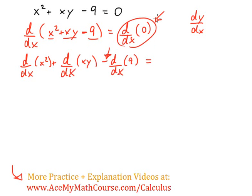Now, the derivative with respect to x of any constant is just 0. So the derivative of 0 with respect to x is 0. Okay, now, let's continue.